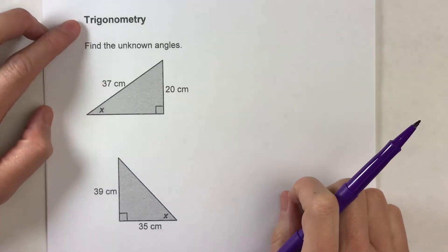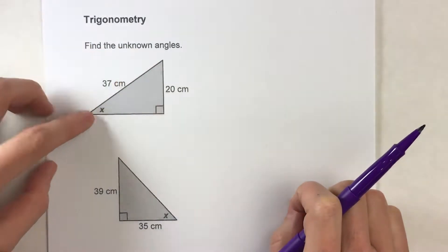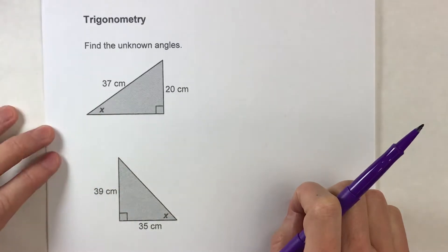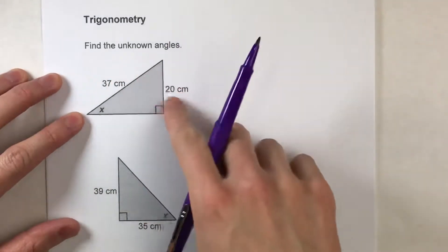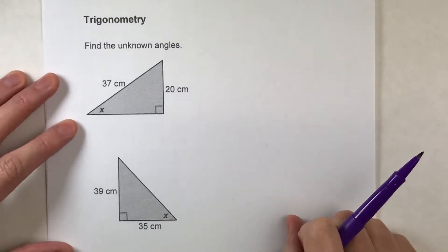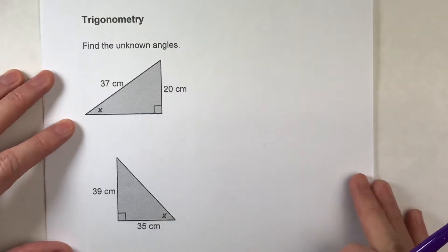So today, we're using trigonometry to find unknown angle measures in right triangles. And it's very similar to finding unknown side lengths in right triangles using trigonometry, but there's a little trick to it. So let's do this.